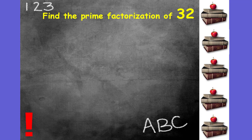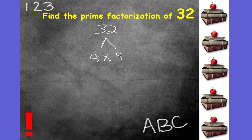Let's find the prime factorization of 32. This is something that we've already done. We can use the factor tree to find this. 32 — I know I can multiply 4 times 8. Remember, you choose any two factors that will multiply together to give you 32. Neither one are prime, so I'm going to have to factor each.